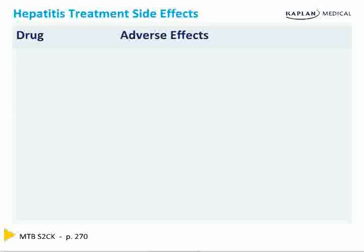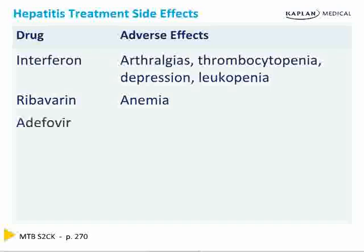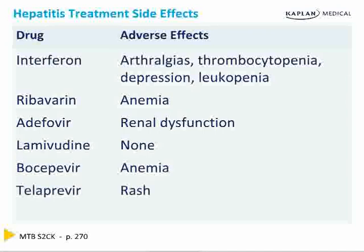There are many adverse effects to hepatitis treatment — in the short term, many patients say the adverse effects are worse than the disease itself. Interferon gives arthralgias, thrombocytopenia, severe depression, and leukopenia. Ribavirin gives anemia, which is one of the most common findings. Adefovir gives renal dysfunction. Lamivudine has no adverse effects. Boceprevir gives anemia. Telaprevir gives a rash. Note that both ribavirin and boceprevir cause anemia, so it will be augmented in hep C patients.